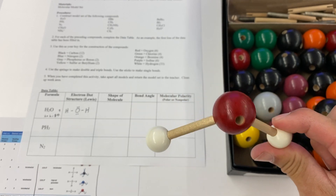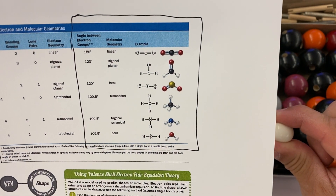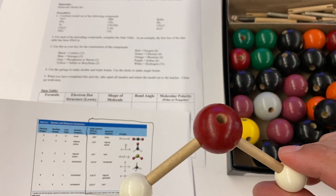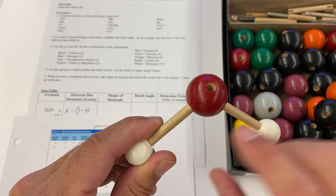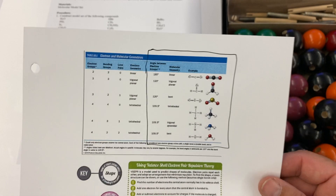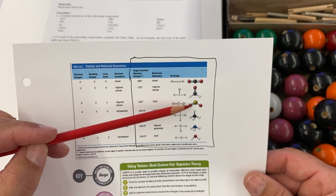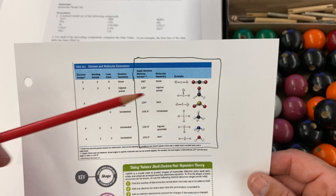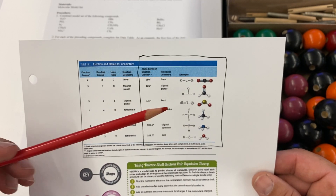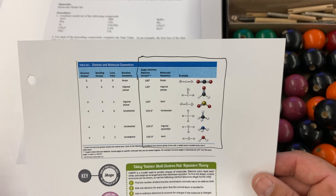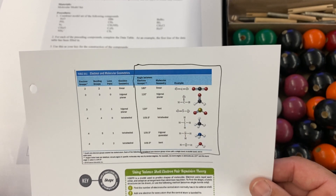I'm going to go to my reference sheet and find something that has two atoms attached to a central atom. You'll notice there are a few options: linear has two atoms attached to the central atom, bent has two atoms attached, and there's another bent at the bottom which also has two atoms attached to the central atom. So I have three options as to what my shape might be — it's all based on how many atoms are attached to the central atom.